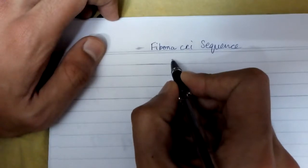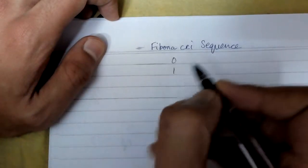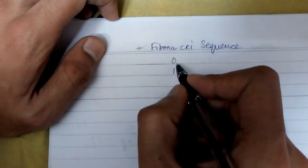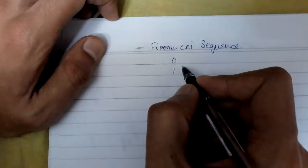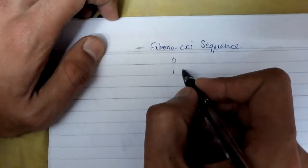We will be looking at what is a Fibonacci sequence. So Fibonacci sequence is a sequence of numbers which typically starts with a 0 or a 1 and then followed by a 1.